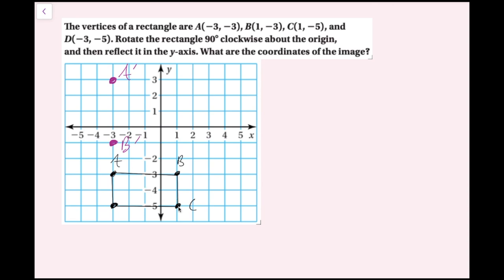For point C: from the origin I go right 1 and down 5. Right becomes down and down becomes left, so I go down 1 and left 5 — that's C′. For point D: from the origin I go down 5 and left 3. Down becomes left and left becomes up, so I go left 5 and up 3 — that's D′. Now I'll draw the dashed lines for the rotated image.